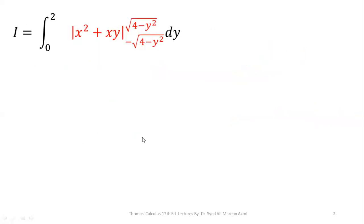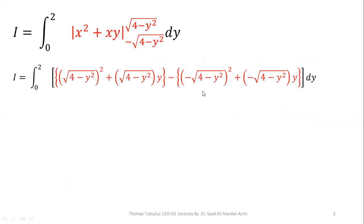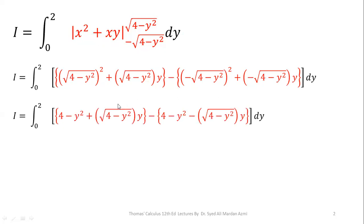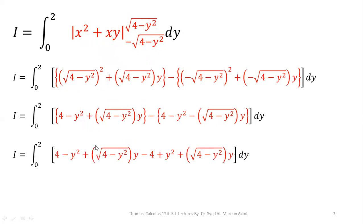In the next step we apply limits using the fundamental theorem of calculus — upper limit minus lower limit. For the upper limit, x is replaced with square root of (4 minus y squared). Notice that the square and square root cancel out, and the minus becomes positive because the square of a negative is positive. Making the simplification, we have 4 minus y squared plus square root of (4 minus y squared) times y, minus 4 minus y squared minus square root of (4 minus y squared) times y.